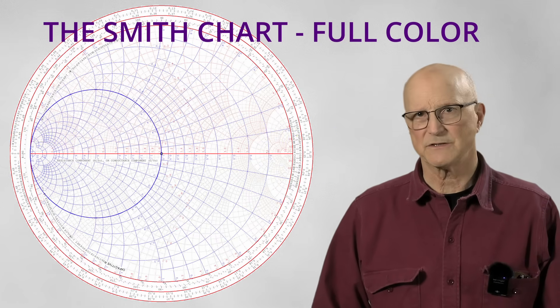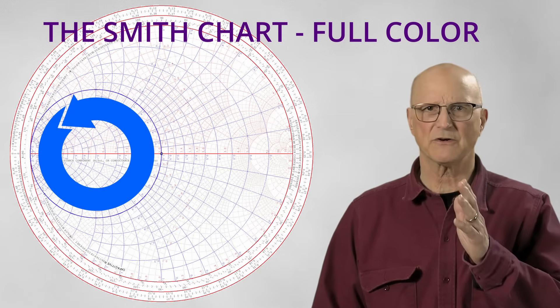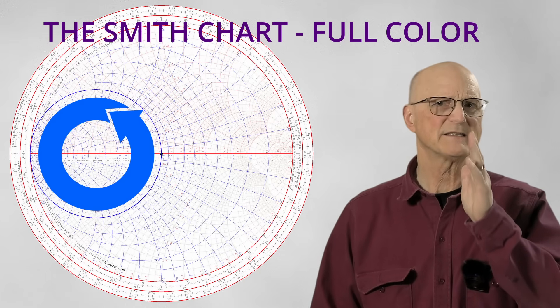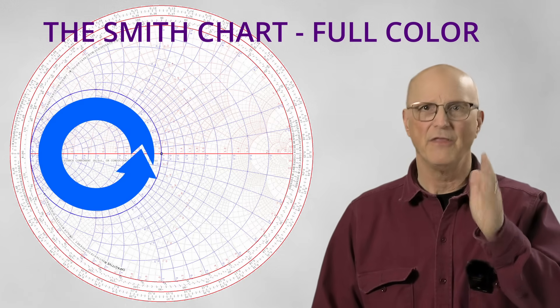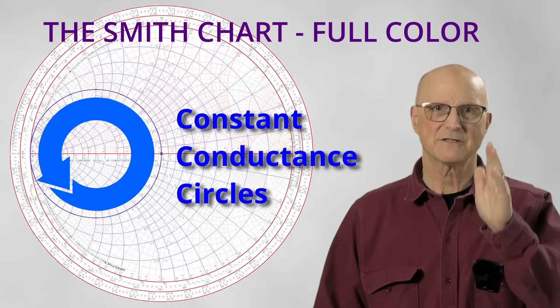Like the resistance circles, as we move around any given conductance circle, the conductance does not change. Thus, they are called constant conductance circles.